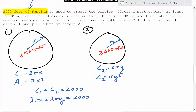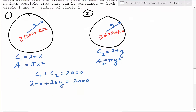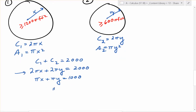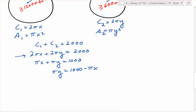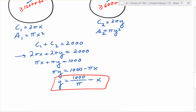This is the summary of the question so far — let's suss out some relationships. Dividing by 2, πx plus πy equals 1,000, so πy equals 1,000 minus πx. Divide both sides by π and you get y equals 1,000 over π minus x. This is an important relationship.